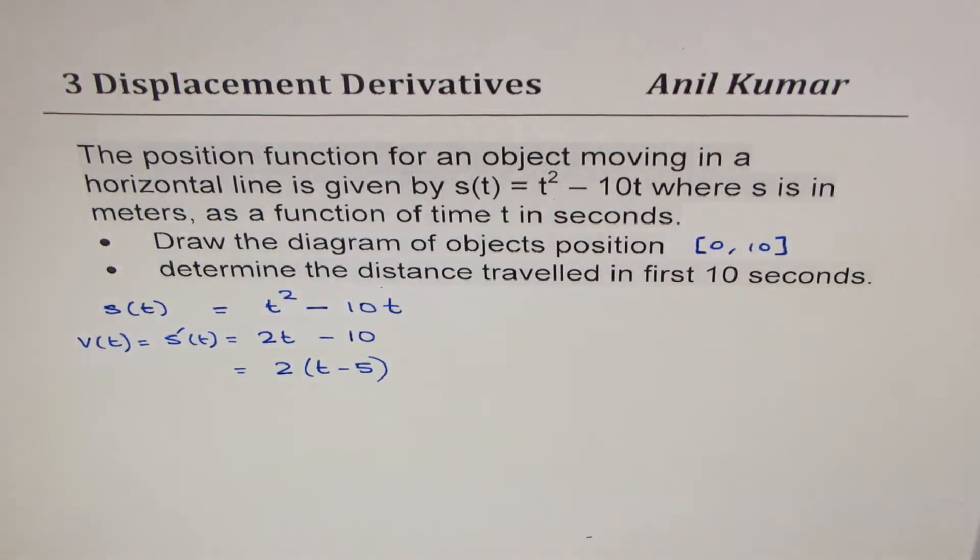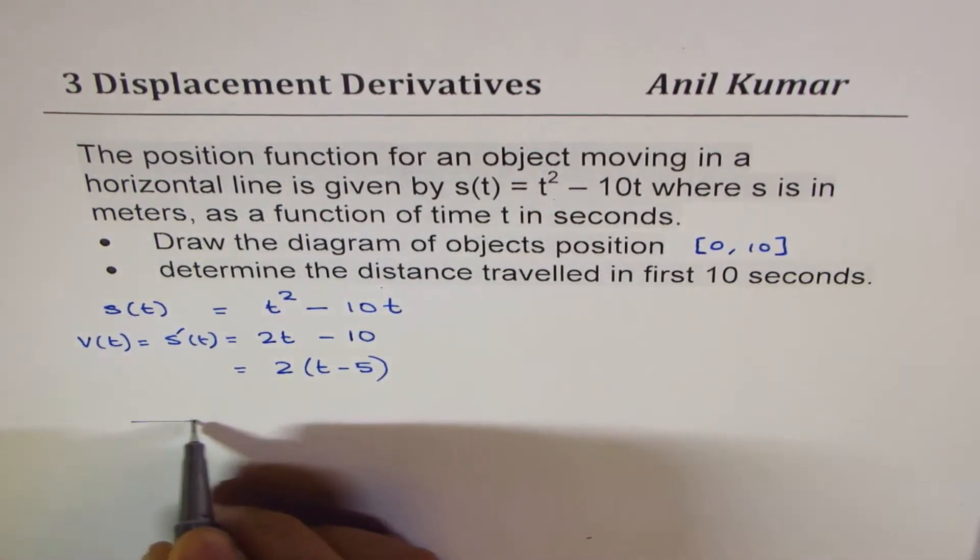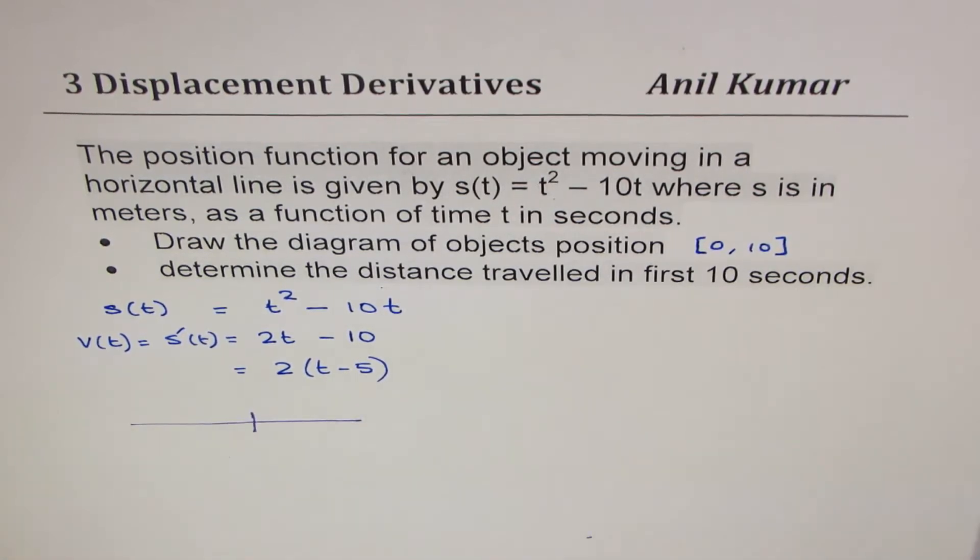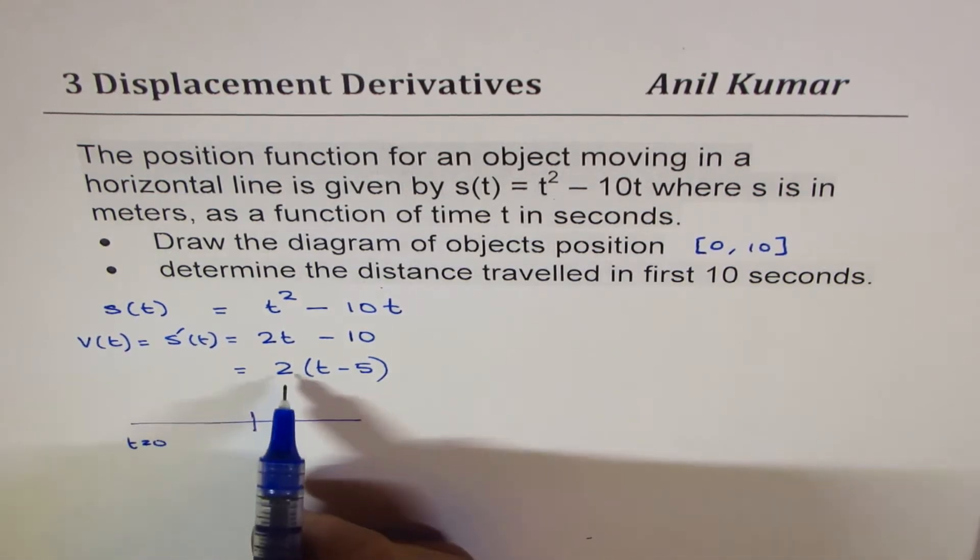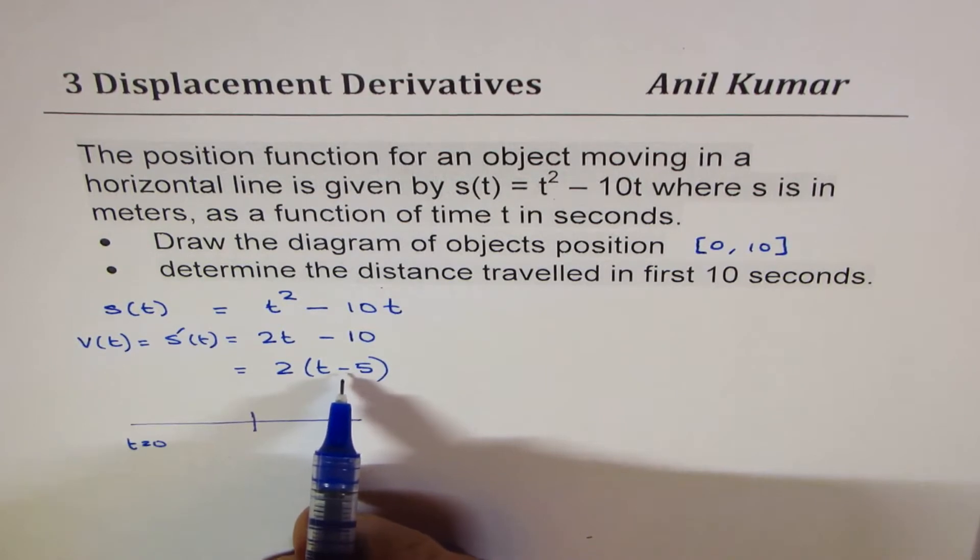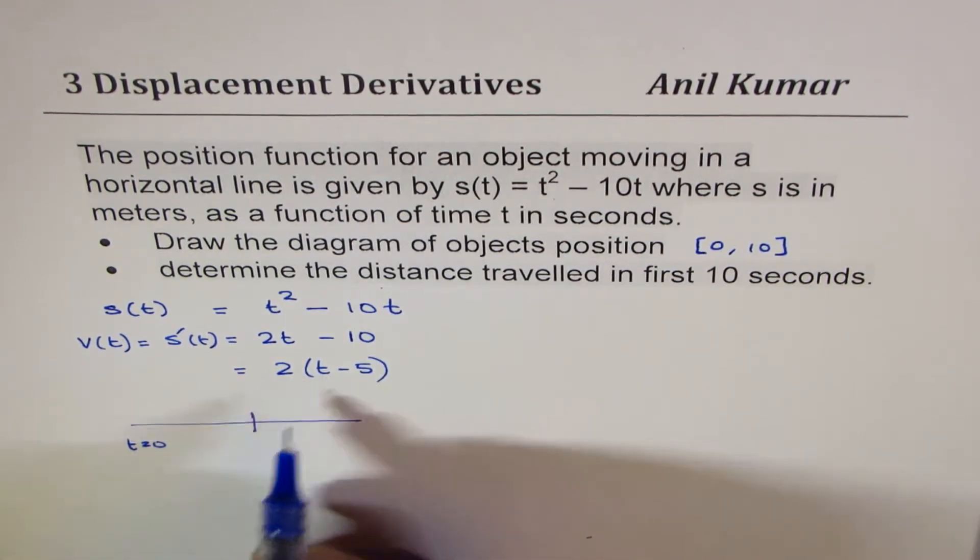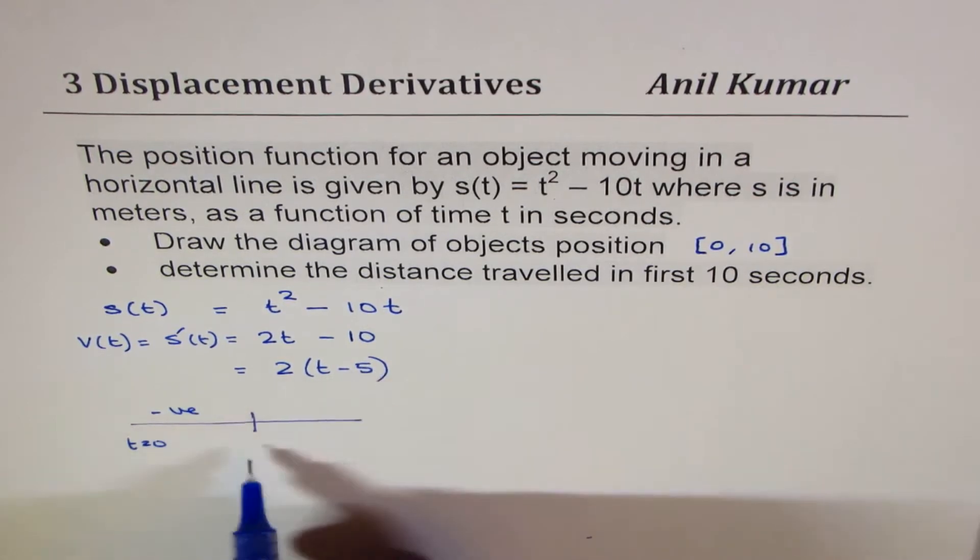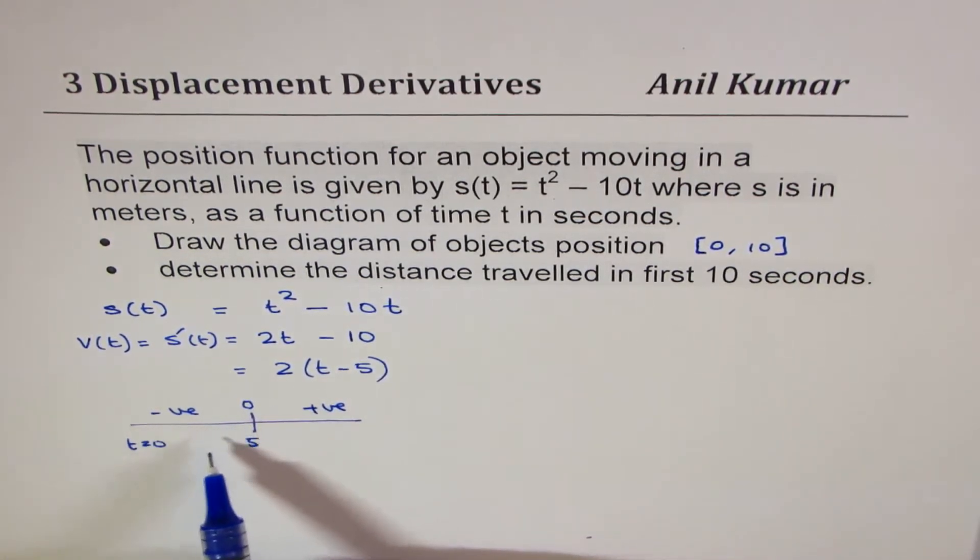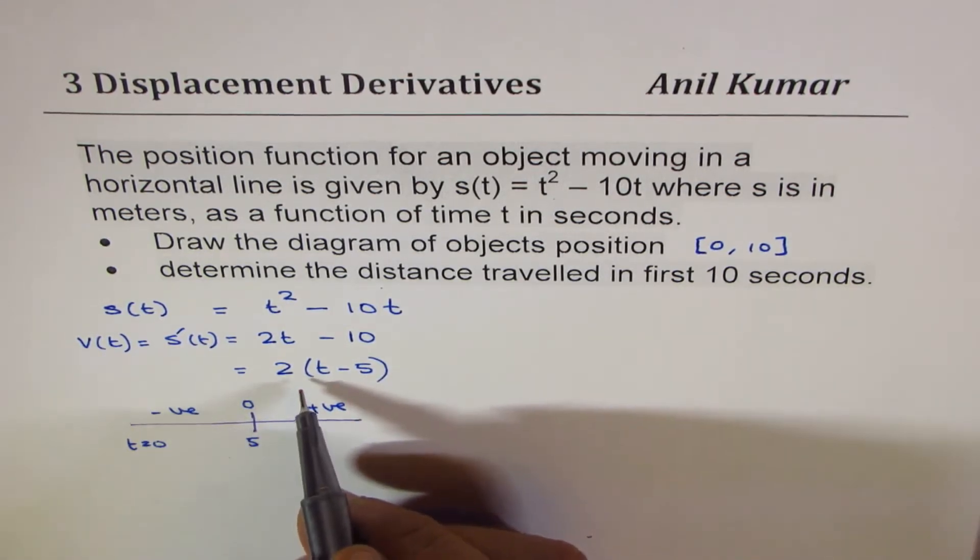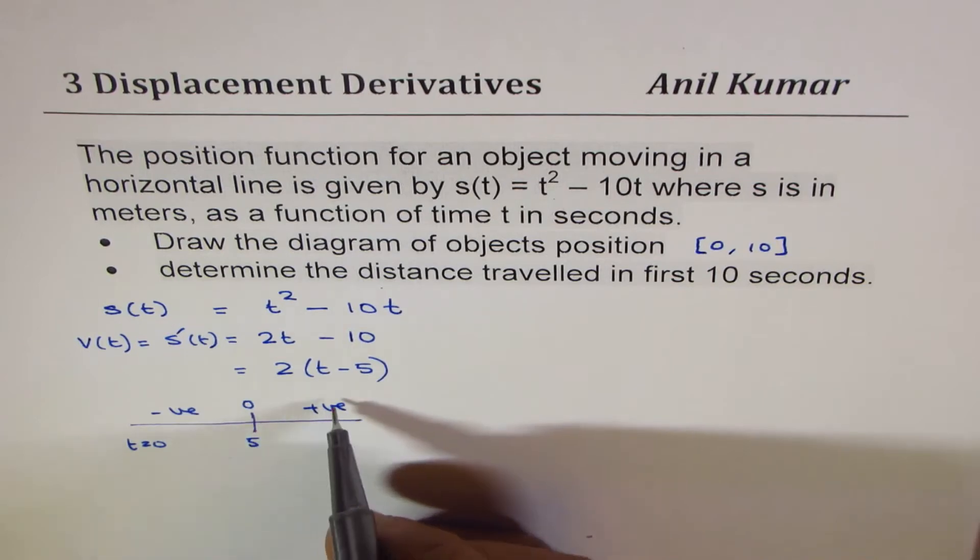As you can see from here, if you analyze the velocity function, you will realize that if t equals 0, then the velocity is negative. If t equals 5, velocity is 0, but if t is greater than 5, then it is positive. So velocity is negative when t is to start with, and then after 5 seconds, the velocity becomes positive.